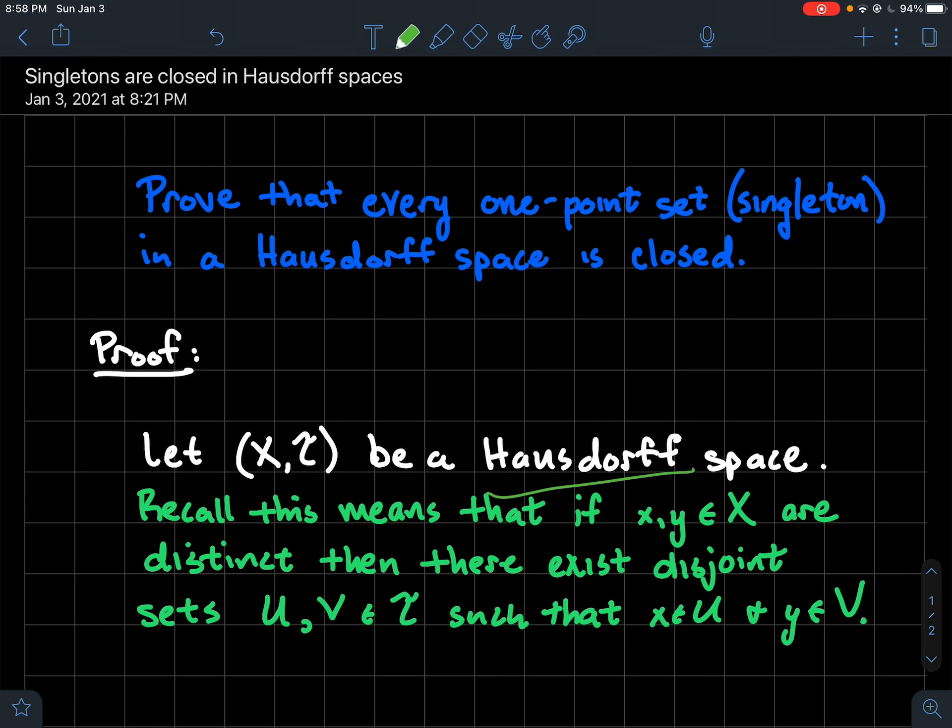So what's it mean to be a Hausdorff space? Recall that means that if you had two elements x and y that are in your set X and we're assuming they're distinct, so we're not looking at the possibility it's the same element, then what should you be able to do? What's this Hausdorff property?